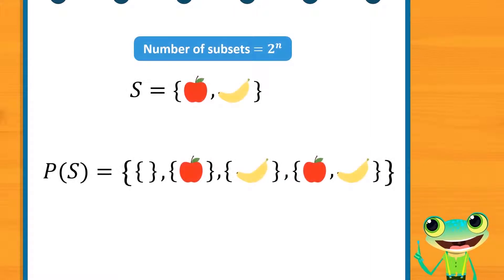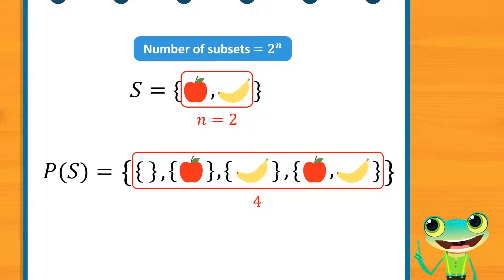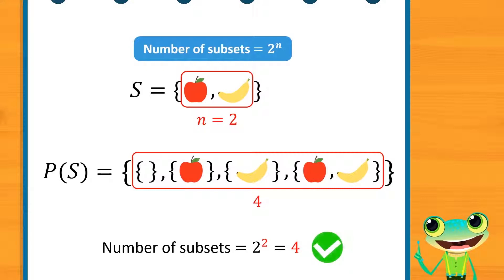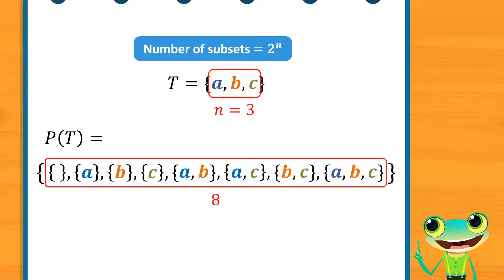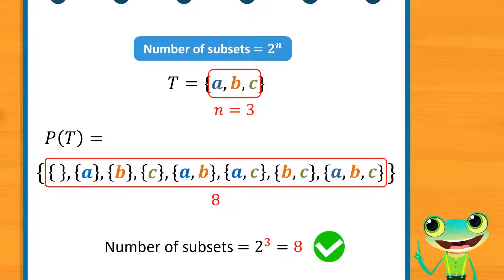Let's check this formula. Again, we turn to set S, where we have already found the power set. There are two elements in set S and four elements in the power set of S. Since 2 to the power of 2 is 4, the formula is correct. Let's check this formula for set T. There are three elements in set T and eight elements in the power set of T. Since 2 to the power of 3 is 8, the formula is once again correct.